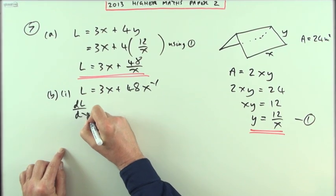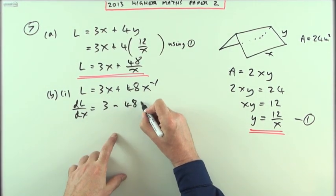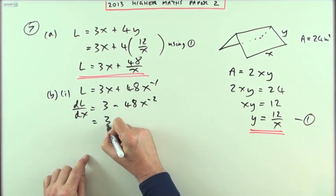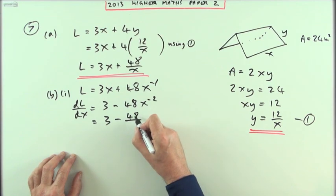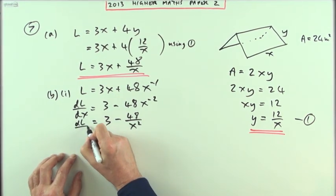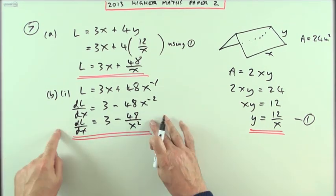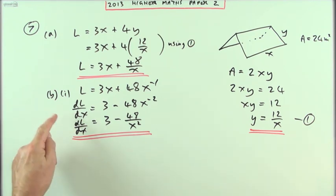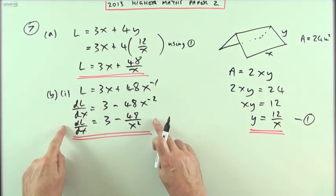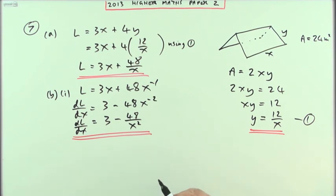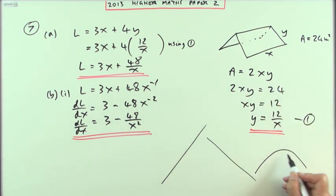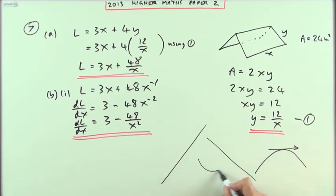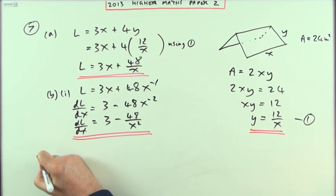So dL by dx will be 3 minus, multiply by the power, minus 48x, take 1 off the power, negative 2. But I'm going to be using this equation. So I'd rather it had it back in its proper form of powers and reciprocals. So that's 48 over x squared. So there's the expression for the rate of change of the length with respect to x. Now to find the minimum length required for this, I want this expression to equal 0. At an optimum value, I want the rate of change to be 0. Because otherwise it's just going to keep increasing forever or decreasing forever. It'll only reach an optimum if it ever has a rate of change of 0, one way or the other.